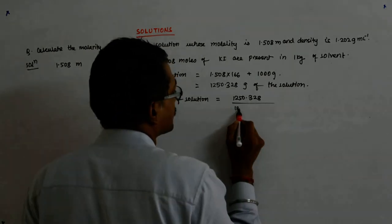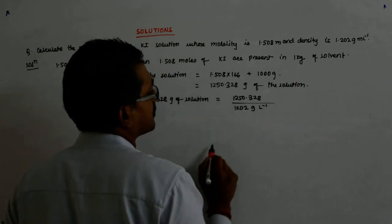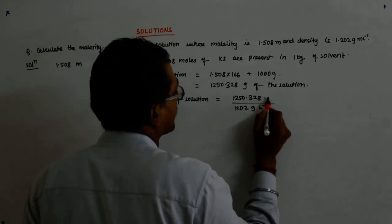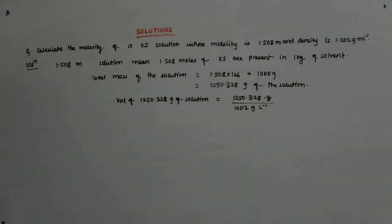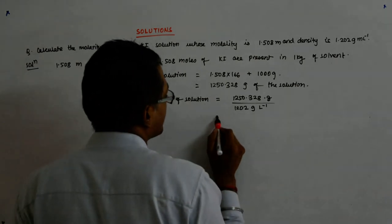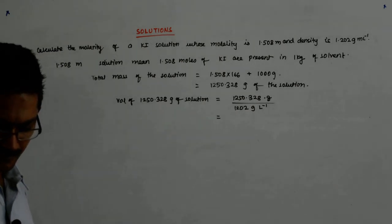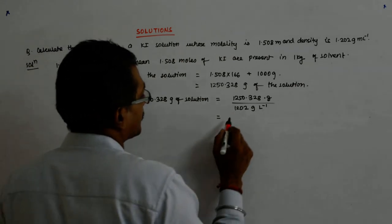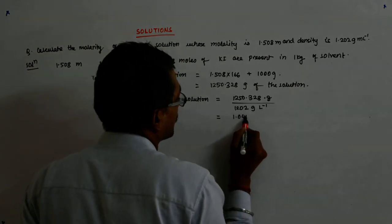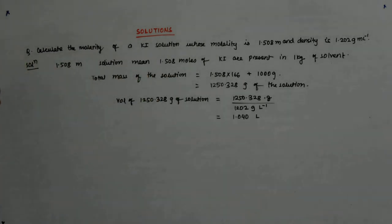And this is grams. You see how gram gram cuts and liter goes up. So, it is equal to how much liter? This is 1.040 liters.